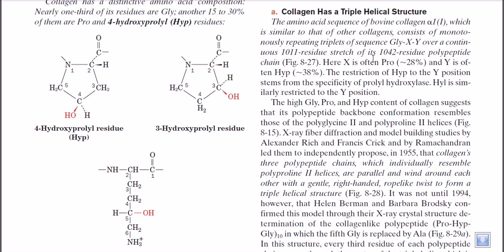The arrangement of amino acids in collagen follows a repeating Gly-X-Y pattern. It will start with glycine, then X and Y, repeating over and over to form a continuous stretch of about 1011 residues. In this arrangement, X is often proline and Y is most often hydroxyproline, so the repeating unit is glycine, proline, hydroxyproline. This glycine is present all the time because glycine has a very small R group — a hydrogen — which is necessary to accommodate the structure. We will look at the structural details below.